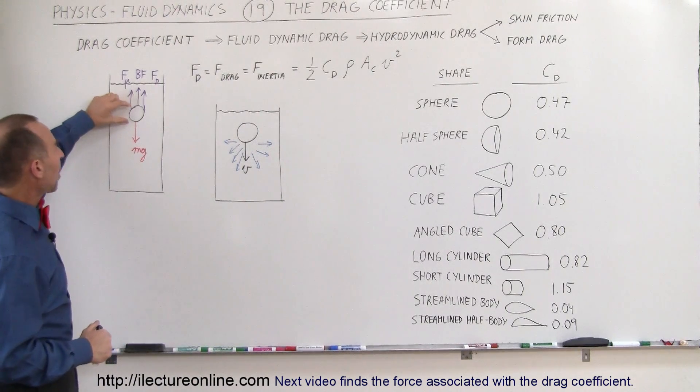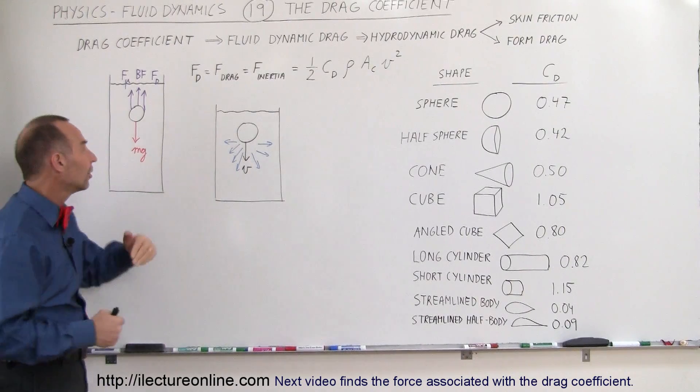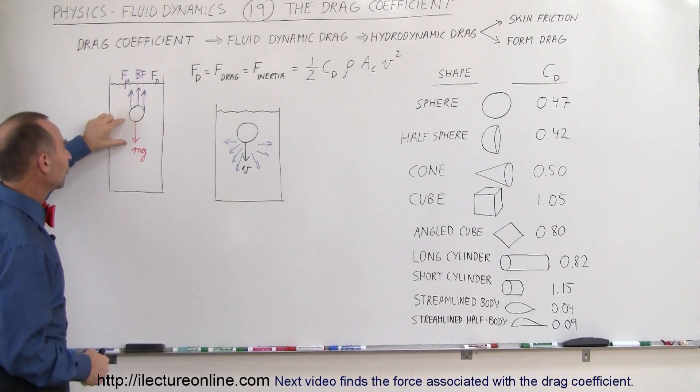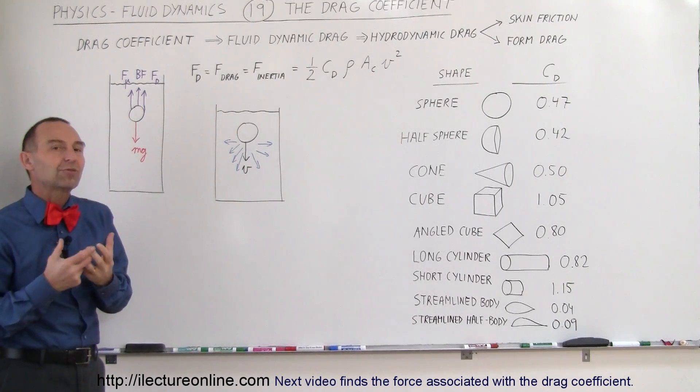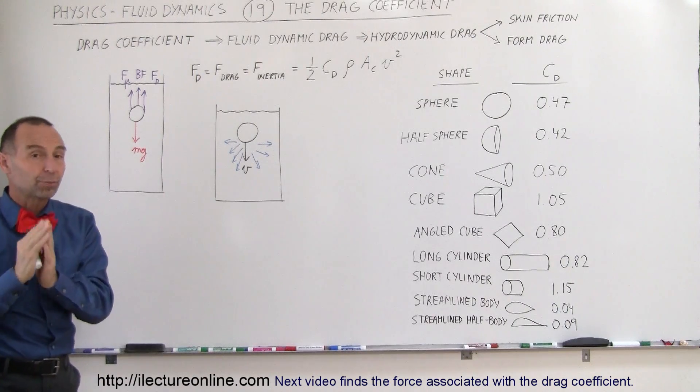If you can see here an object being dropped in a fluid, and assuming that the density of the object is greater than the density of the fluid, the object will be moving downward so there's the force of gravity acting on the mass of the object. There's obviously the weight of the object pulling it down and then there's three forces pushing back.